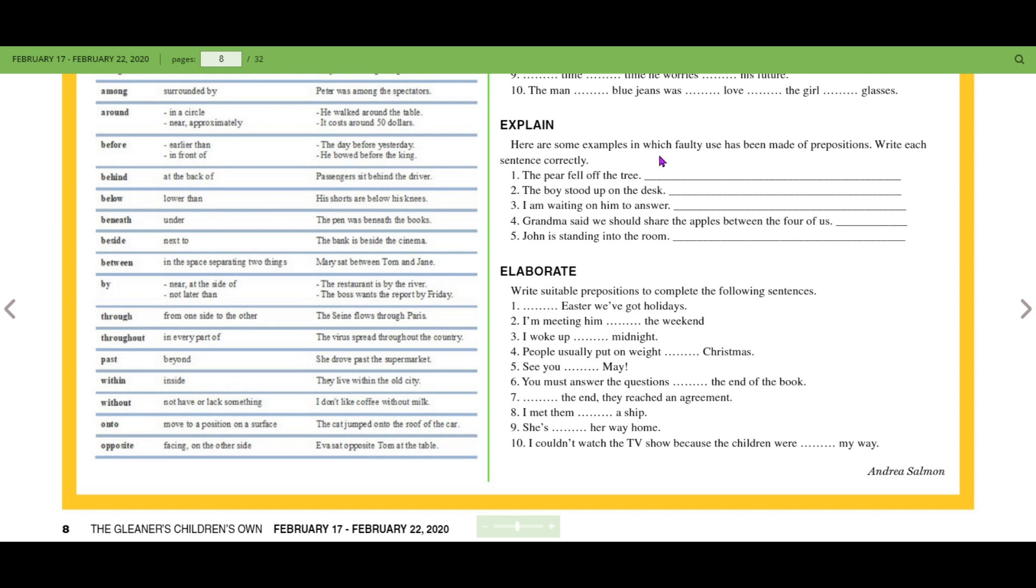Explain. Here are some examples in which faulty use has been made of prepositions. Write each sentence correctly. The pear fell off the tree. The boy stood up on the desk. I am waiting on him to answer. Grandma said we should share the apple between the four of us. John is standing into the room.